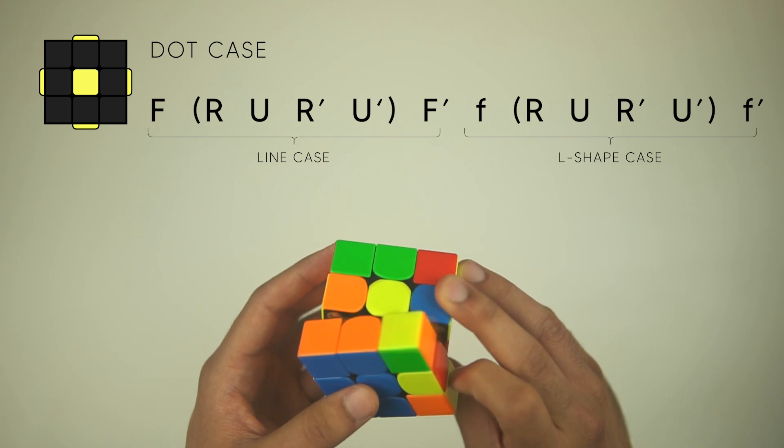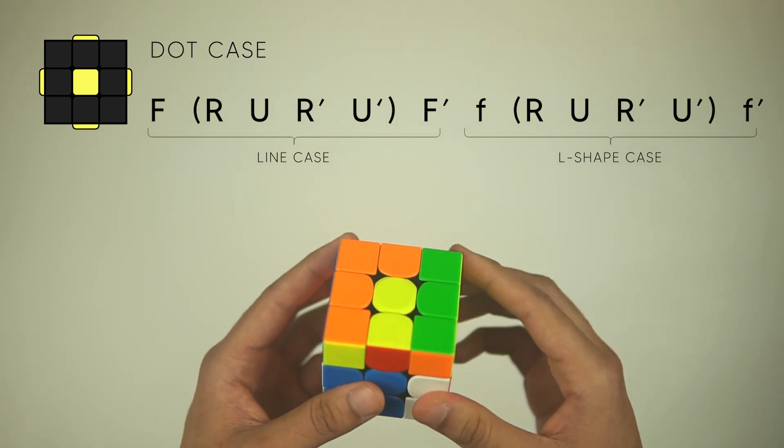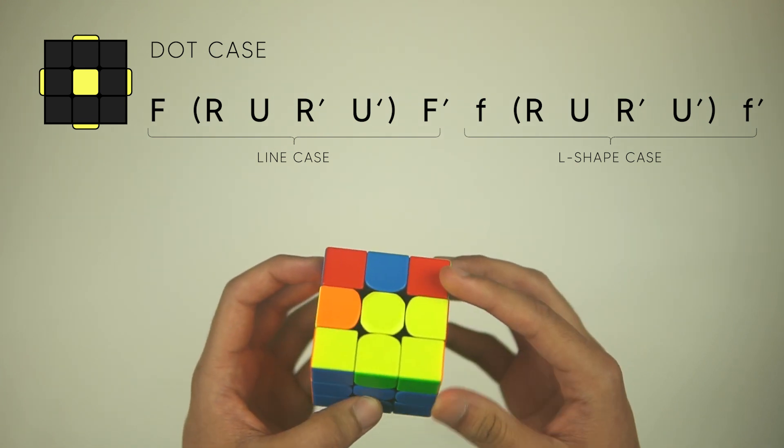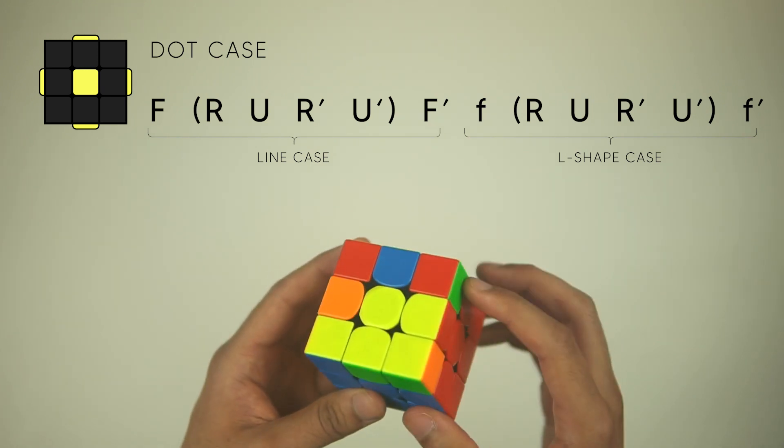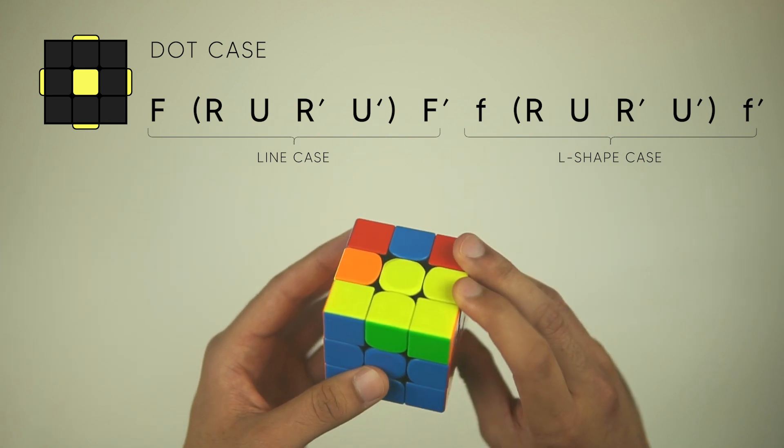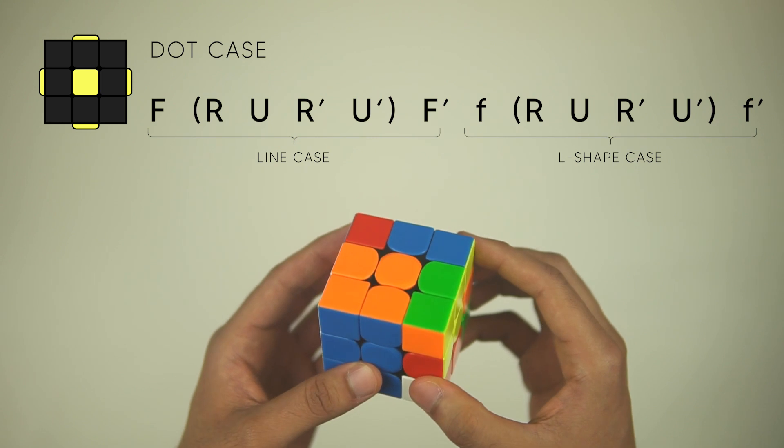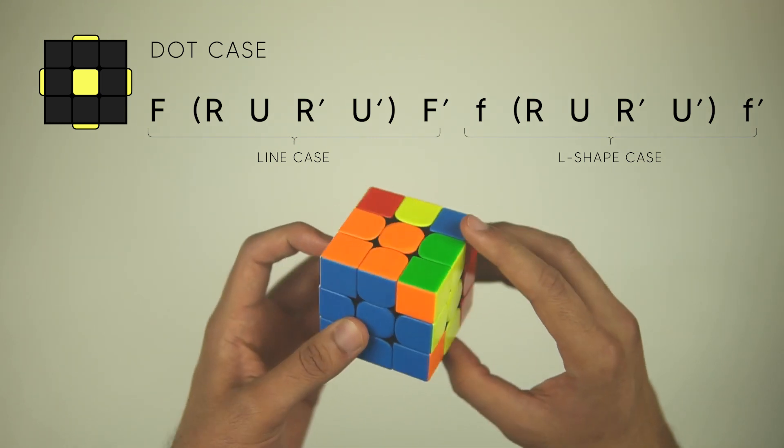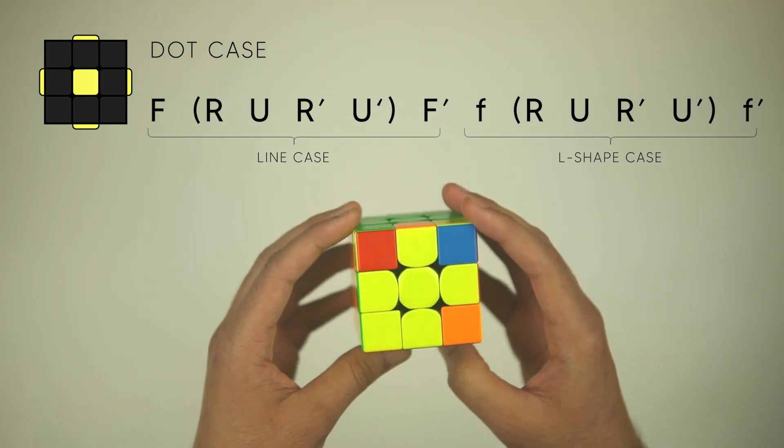We're going to do an F, R, U, R', U', F'—that's the line case algorithm. And notice how it gives us the L-case, and it's in the right position, so we don't have to do any extra moves. Just do the algorithm to solve this with a lowercase F, R, U, R', U', lowercase F', just like that. And there's the yellow cross.